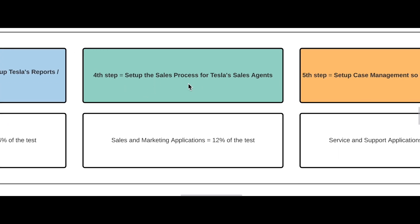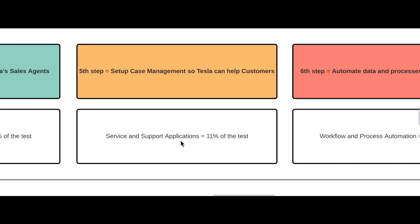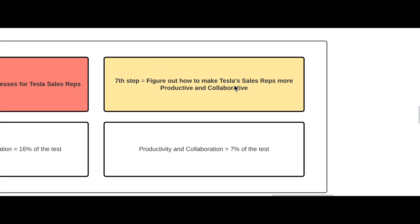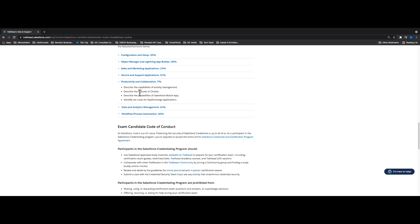The fourth step is setting up the sales process for Tesla sales agents — Sales and Marketing Applications. The fifth step is setting up case management so Tesla can help customers, covering Service and Support Applications at 11% of the test. Then you automate data and processes, which is your Workflow and Process Automation section. Finally, you figure out how to make Tesla sales reps more productive and collaborative — Productivity and Collaboration, which is 7% of the exam, is the last thing to focus on.